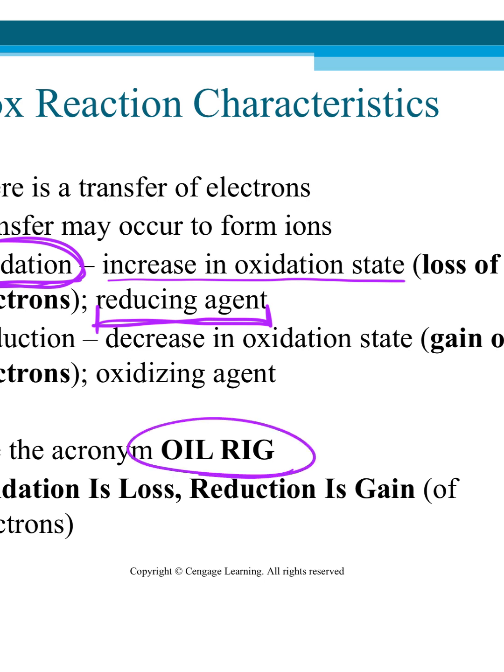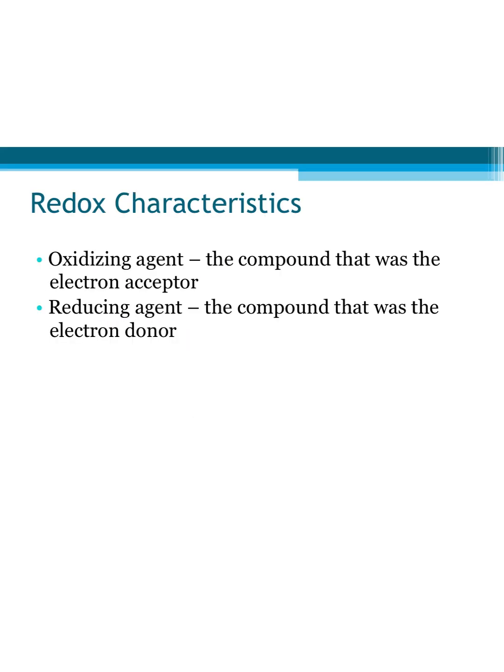We use this acronym OIL RIG. OIL RIG stands for oxidation is loss of electrons and reduction is gain of electrons. So if I am oxidized, I'm losing electrons, which means I am becoming more positive. Reduction is gaining electrons, which means I'm becoming more negative in my oxidation state. Does that kind of make sense? So within a whole reaction, we're going to assign oxidation states and figure out which one is oxidized and which is reduced. But we use this acronym OIL RIG. That's just like something that should stick with you.